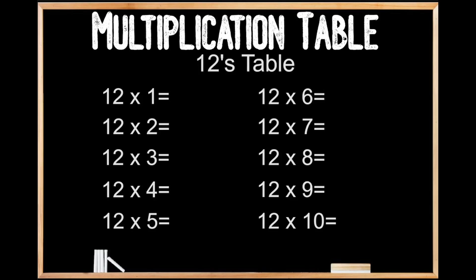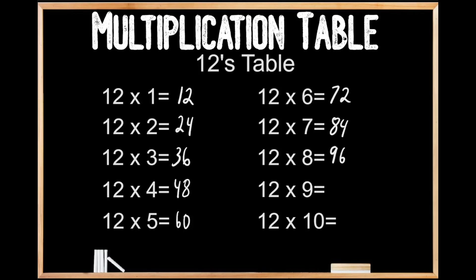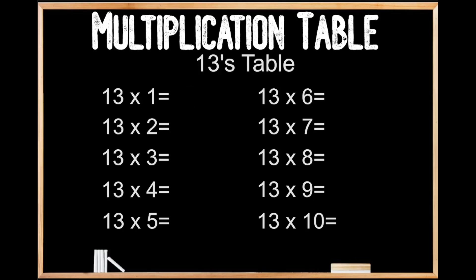12's table. 12 times 1 is 12. 12 times 2 is 24. 12 times 3 is 36. 12 times 4 is 48. 12 times 5 is 60. 12 times 6 is 72. 12 times 7 is 84. 12 times 8 is 96. 12 times 9 is 108. And 12 times 10 is 120.